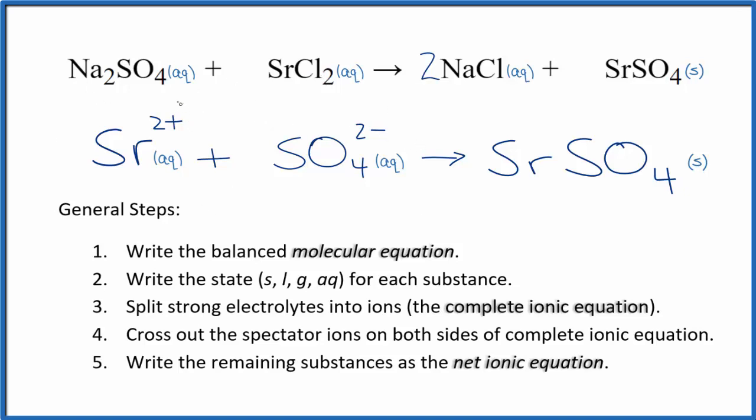You'll see that in the reactants here, we have a charge of 2 plus and 2 minus. That adds up to zero. And over here, the strontium sulfate is a neutral compound, net charge of zero. So charge is balanced. If you count the atoms up, they're balanced too.